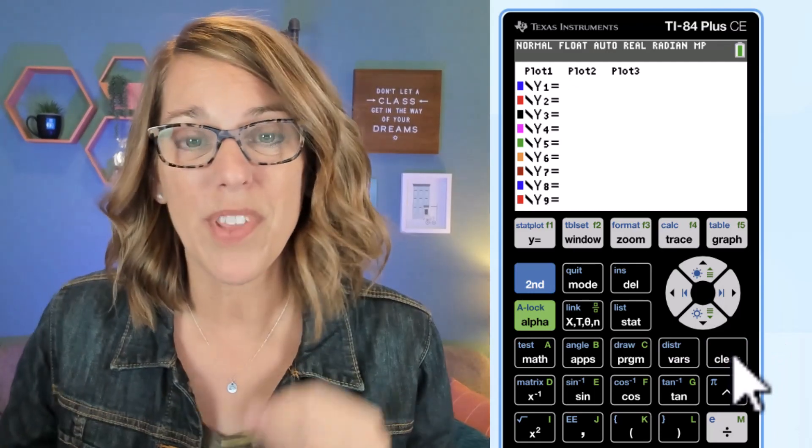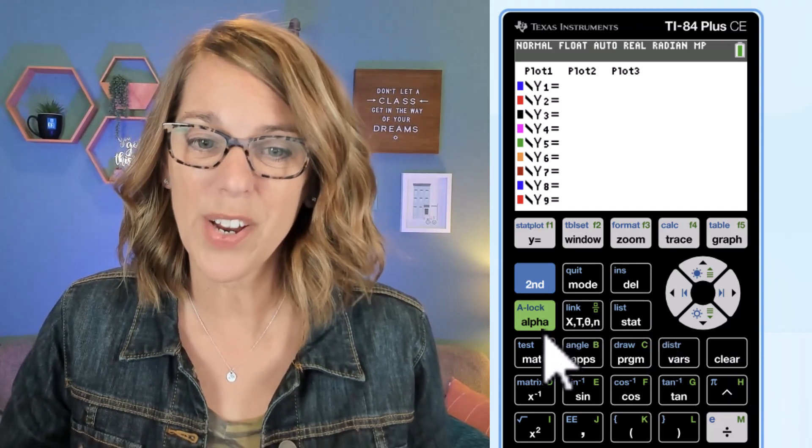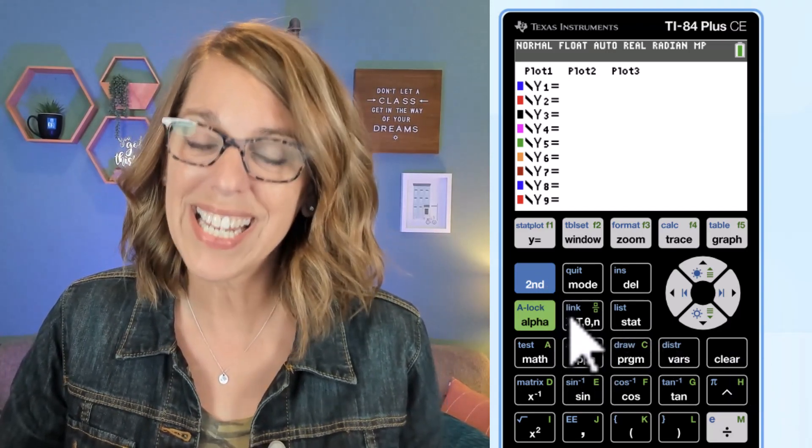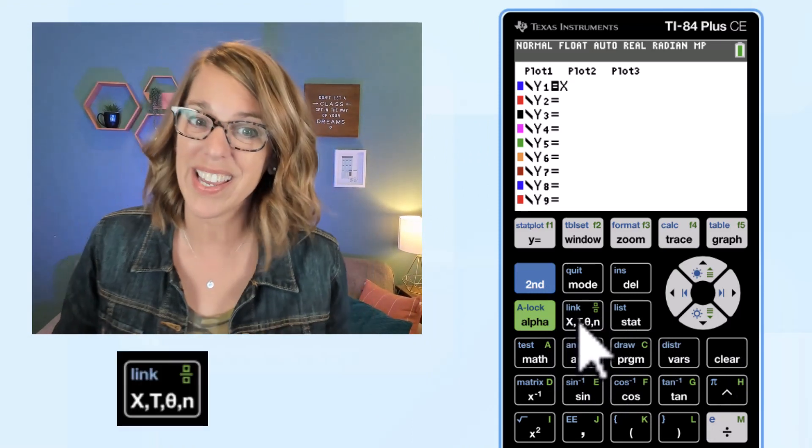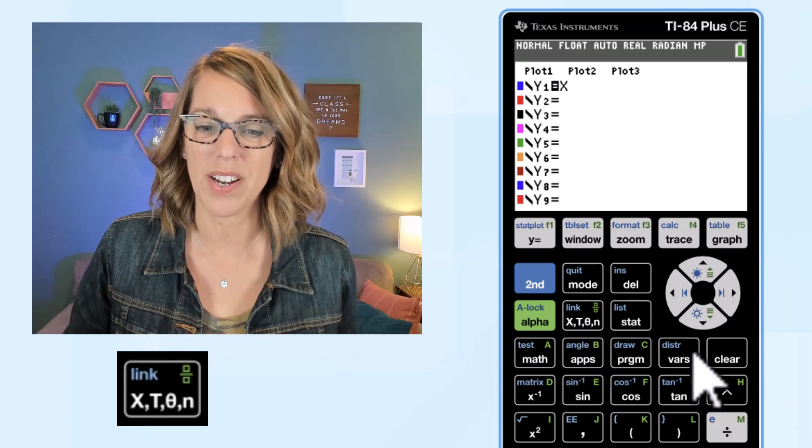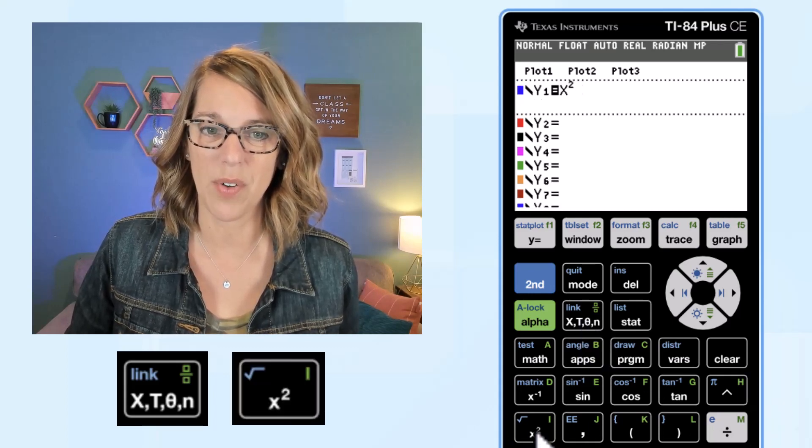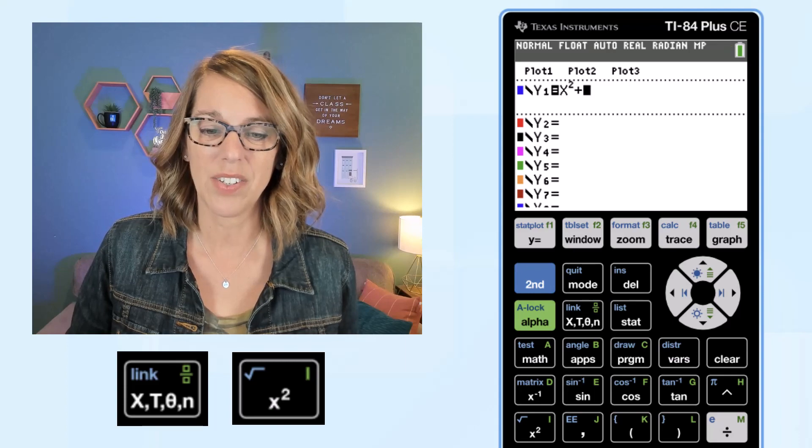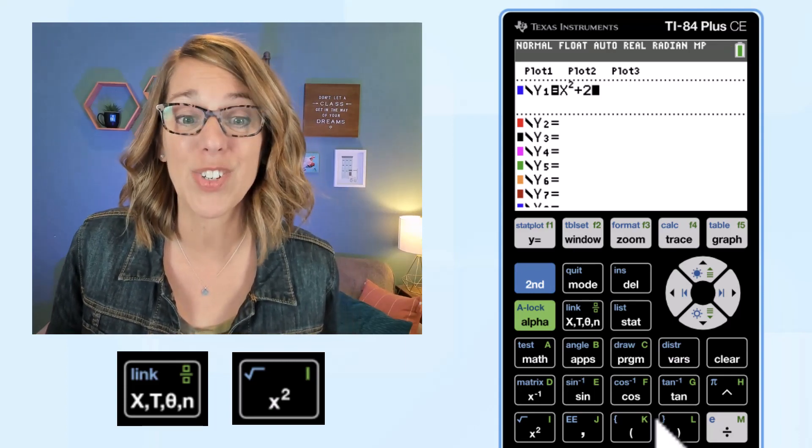I want to use the variable that my calculator uses and my variable key is right here kitty corner from that second button. I'm gonna go ahead and hit that variable key and up pops an X. Let's do a parabola. So I'm gonna do X squared. I'm gonna grab this squared button over here. So X squared and then let's do how about plus 2.